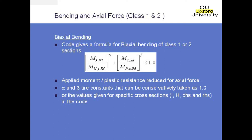This plastic resistance has been reduced for the axial load as well. The alpha and beta constants can conservatively be used as 1, or you can calculate them in a bit more detail. The code does give some values for typical cross sections with I-beams, H-beams, channels, and RHSs, but again they are probably not very useful if you are doing a bridge design because we tend to have more complex structures and more complex geometries.